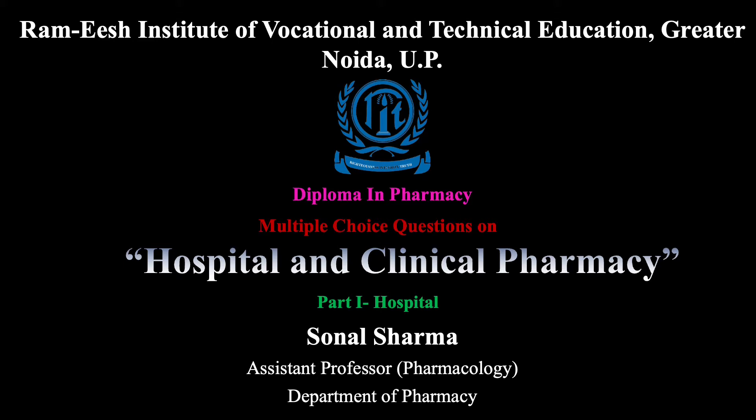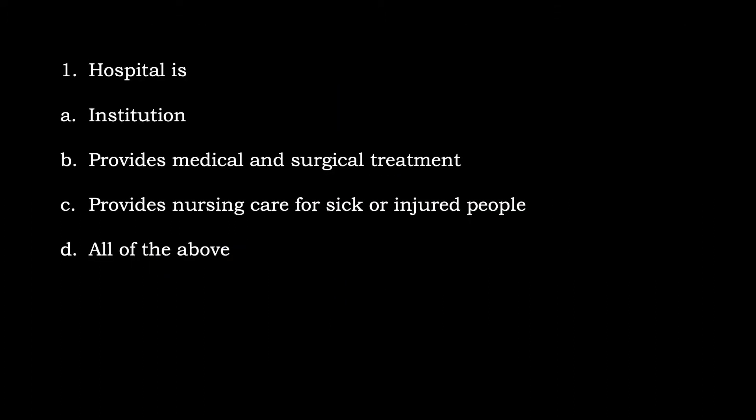Question number one: What is a hospital? The options are: A) Institution, B) Provides medical and surgical treatment, C) Provides nursing care for sick or injured people, and D) All of the above. A hospital is an institution which provides basic medical and surgical treatment and nursing care for sick or injured people. So the correct option is D, all of the above.